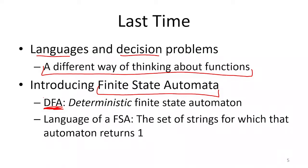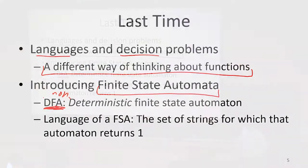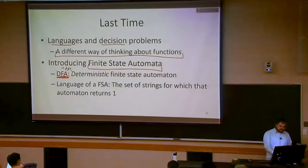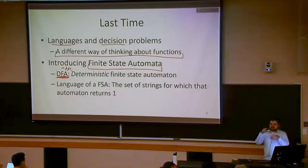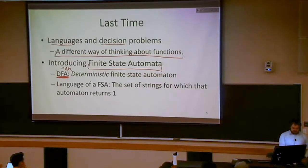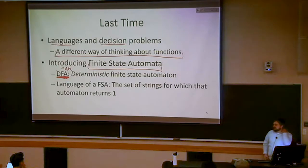Next week we're going to be talking about something called a non-deterministic finite state automaton. Just so that you have the formal name for what we've talked about so far: finite state automata is a catch-all term for a large category of things that involve states and transitions. In particular, we talked about deterministic finite state automata last class.